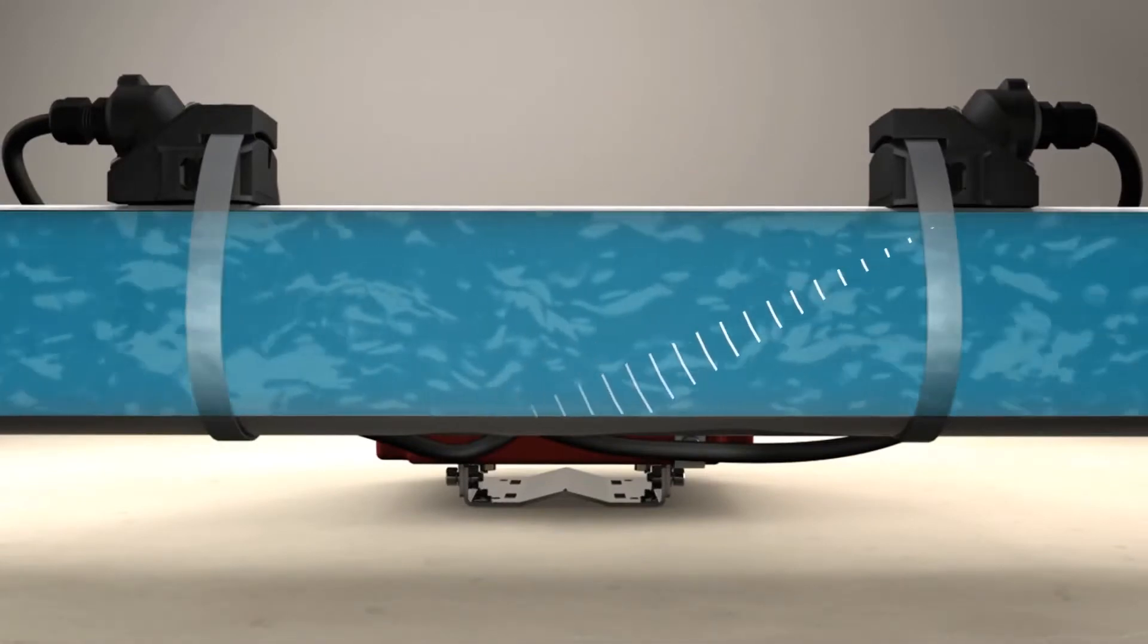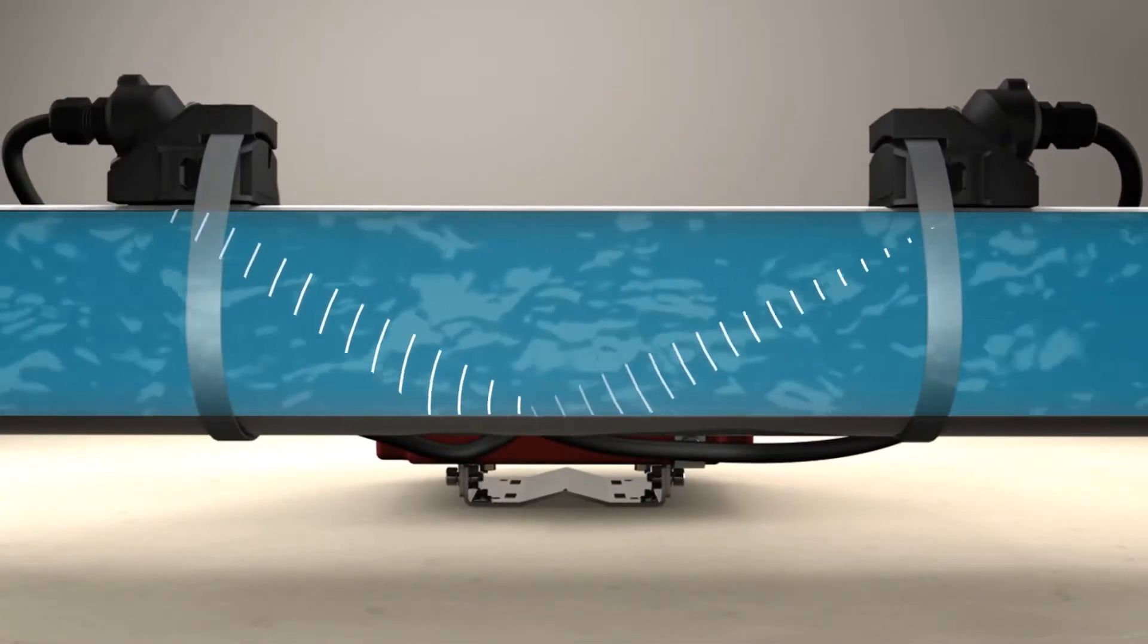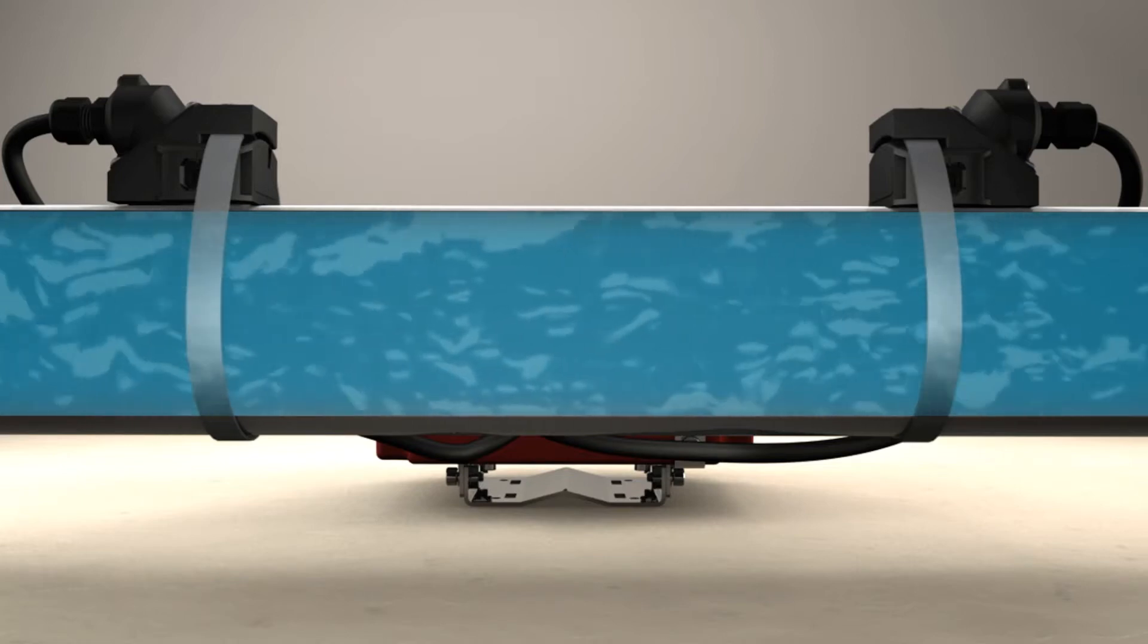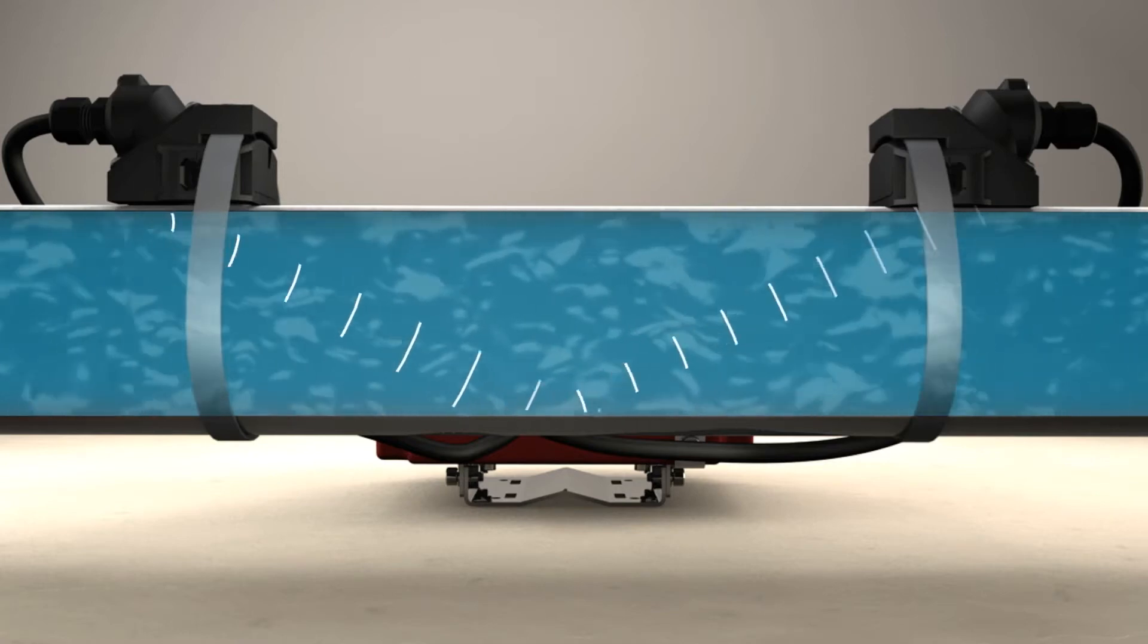A signal is transmitted through the pipe wall from one transducer to another. When the signal is moving with the flow, it travels faster. When the signal is moving against the flow, it travels slower.